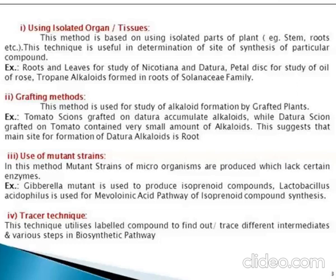The third method is the use of mutant strains. In this method, mutant strains of microorganisms are produced which lack certain enzymes. For example, Gibberella mutant is used to produce isoprenoid compounds, and Lactobacillus acidophilus is used for the mevalonic acid pathway of isoprenoid compound synthesis.